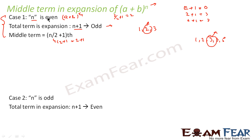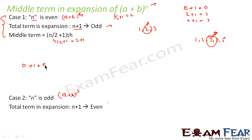If you get a question, find the actual number of terms first. If n = 4, you get 5 terms, so the middle term is the (n/2 + 1)th. Now in case n is odd — for example (a + b) to the power n with n odd — the total number of terms is even, because odd plus 1 gives even.